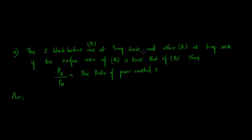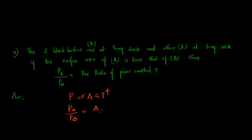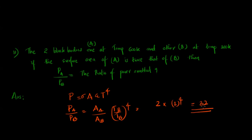The next question is from black body radiation. Two black bodies A and B are at temperatures 600 K and 300 K respectively, and the surface area of A is twice that of B. Using P = σAεT⁴, the ratio P_A/P_B = (A_A/A_B) × (T_A/T_B)⁴ = 2 × 2⁴ = 32. So P_A/P_B = 32.